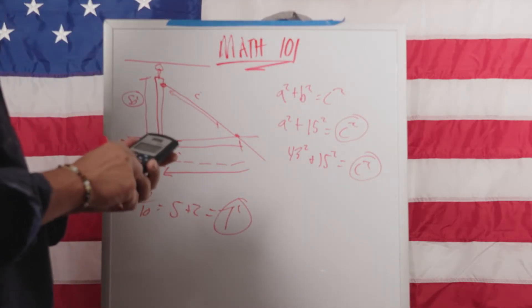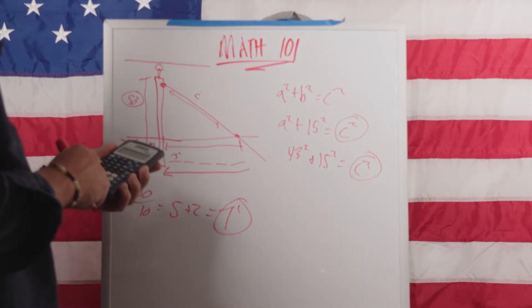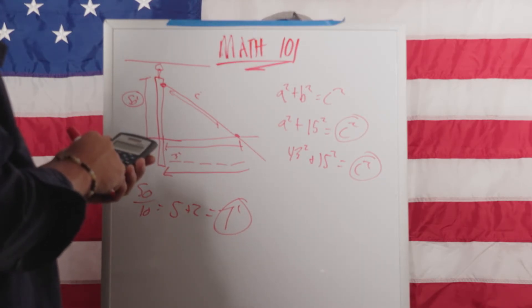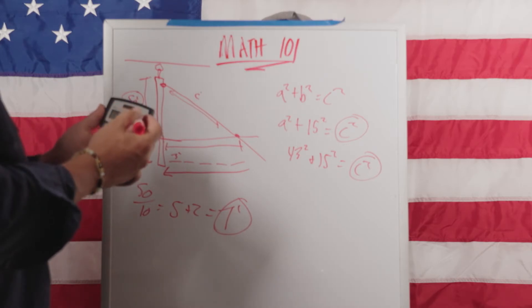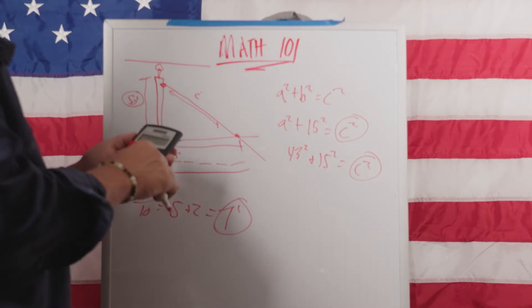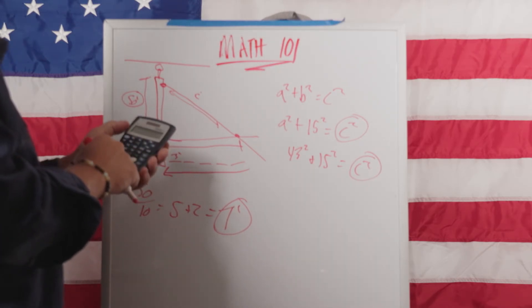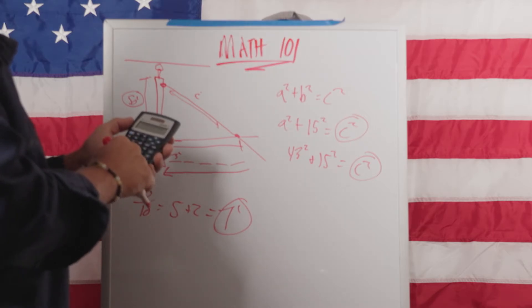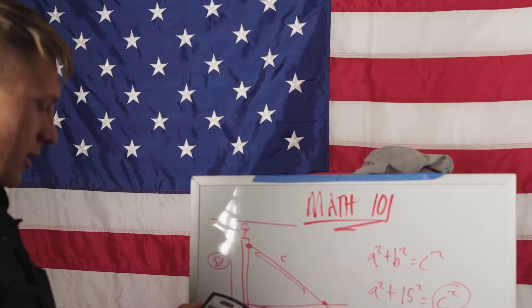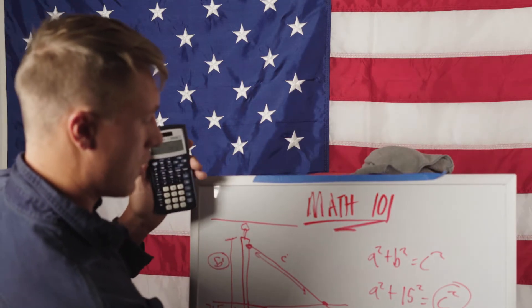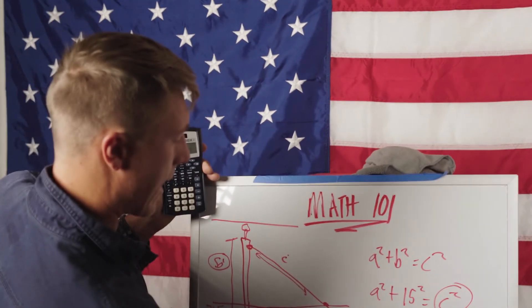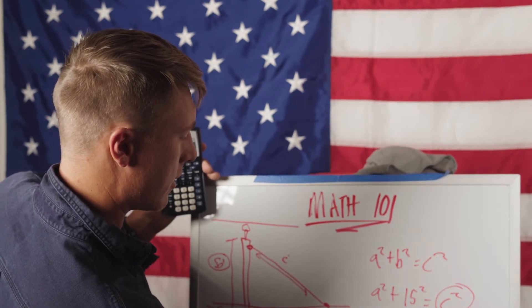So we'll do 43² + 15² = c², we're trying to find C, which is the guy length. So we just take our handy dandy calculator and we'll do 43² + 15² = 2074. So then we take the square root of 2074 = 45.5.